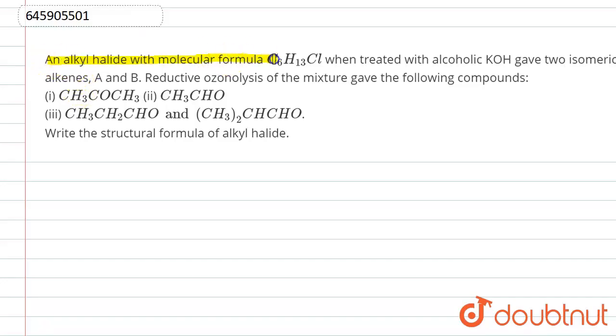An alkyl halide with molecular formula C6H13Cl, when treated with alcoholic KOH, gives two isomeric alkenes A and B. Reductive ozonolysis of the mixture gives the following four compounds. Write the structural formula of the alkyl halide.